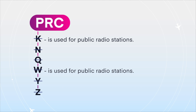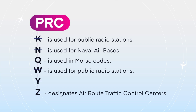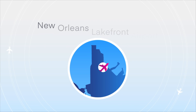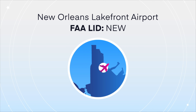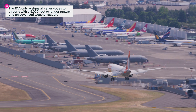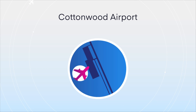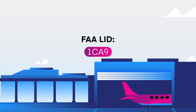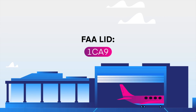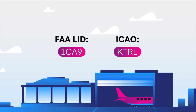Take note — there's going to be a quiz at the end. K and W are reserved for public radio stations, the letter Q is used for Morse code Q codes, N is used for naval air bases, and Z designates air route traffic control centers. The letter Y is not used to avoid confusion with airport codes used in Canada. Despite all these rules, the FAA occasionally assigns LIDs starting with these letters anyway — for example, New Orleans Lakefront Airport, which is NEW. The FAA only assigns all-letter codes to airports with 5,000-foot runways or longer that also have an advanced weather station. Small public-use airports have LIDs that use one letter and two numbers. Small private-use airfields get two letters and two numbers, making for a four-character LID. Luckily, there's no chance of mixing that up with four-letter ICAO codes because ICAO doesn't use numbers in their airport codes.